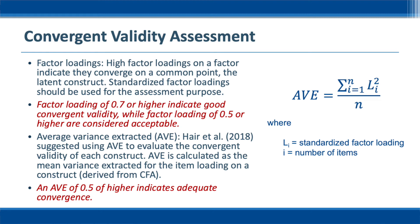This is the formula for AVE: we have the sum of squared factor loadings divided by the number of items. We will use Excel to calculate AVE using CFA outputs. This is the CFA model that we have tested and confirmed. Let's look at the outputs — select Estimates. We will find standardized factor loadings. Right-click and select Copy, then paste these values into Excel.